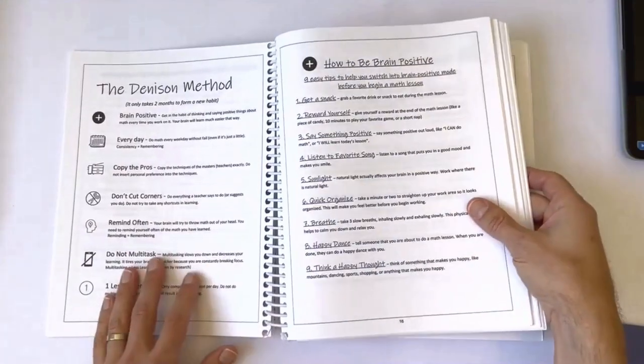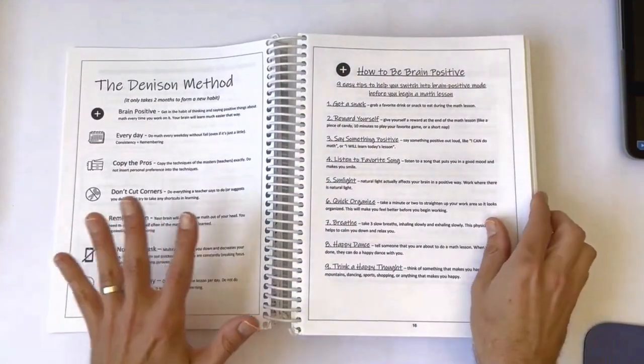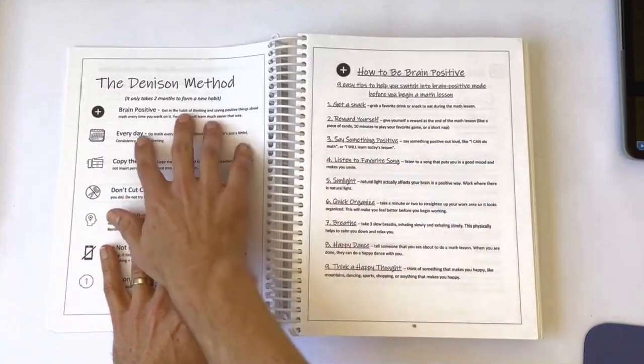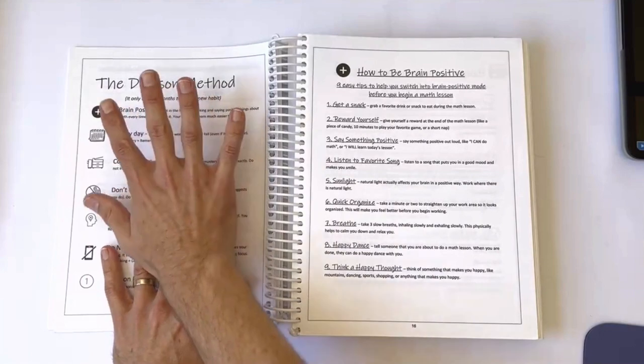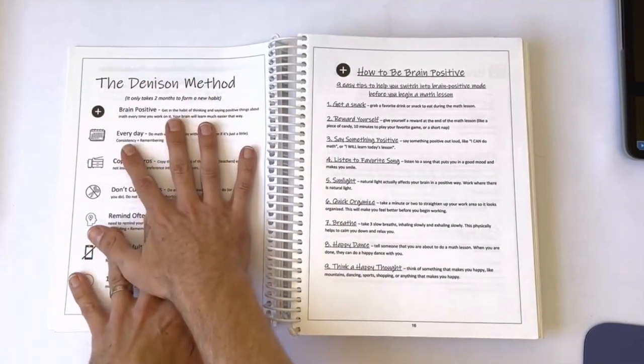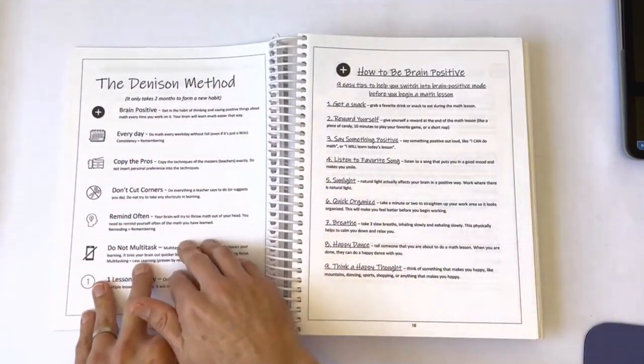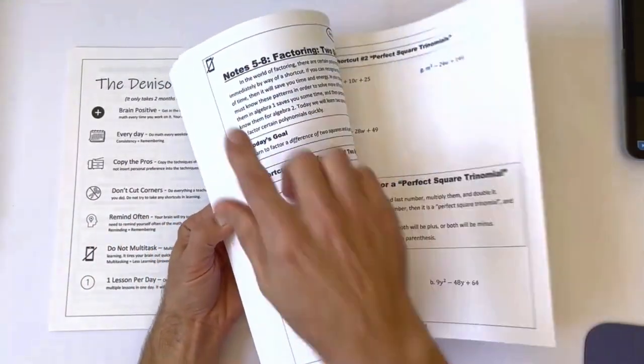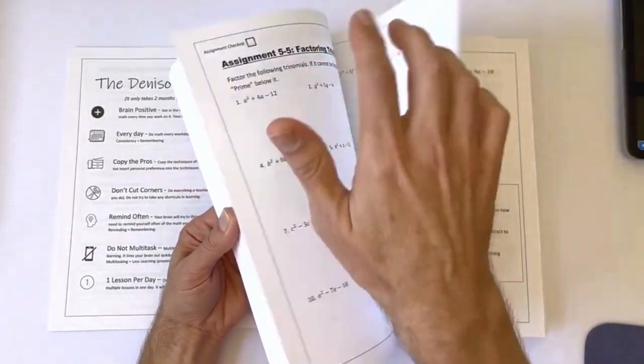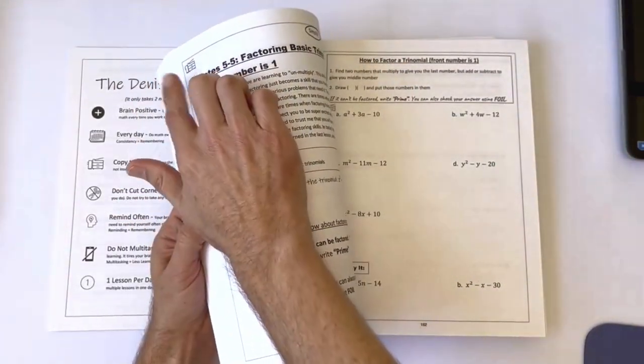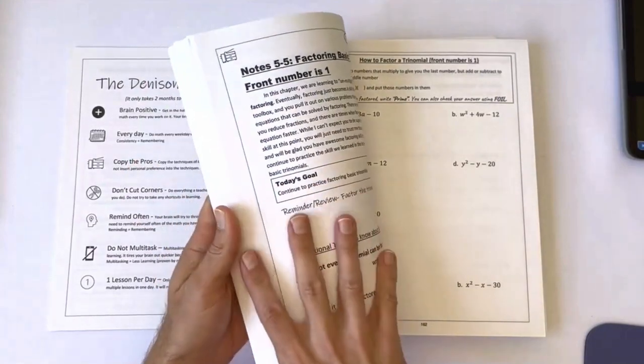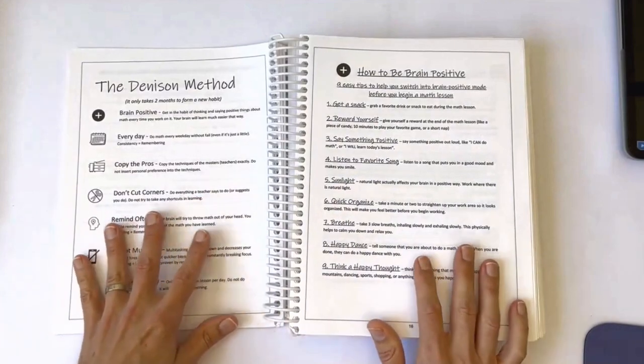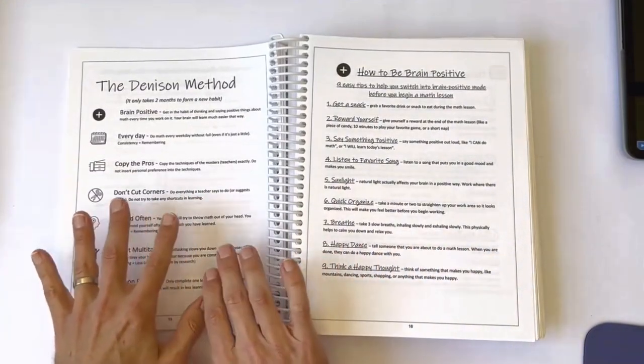One additional thing that you will find throughout the course is that I not only teach math, but I also directly teach learning strategies. I call it the Denison Method, but it's really just common sense learning techniques and strategies that make learning math so much easier. Throughout the course, there are these little icons up in the corner of the notes, and they correlate to a learning strategy from the Denison Method, and I emphasize them in almost every lesson, hoping they will become habit for the student.